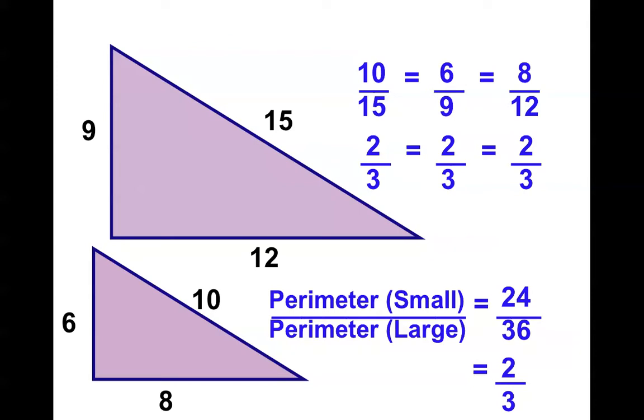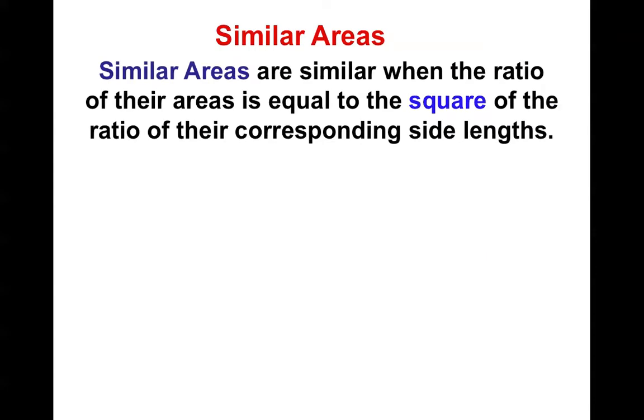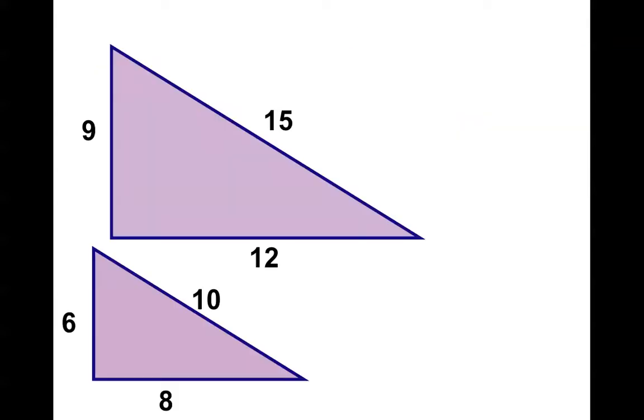Let's check out what the, if area has a relationship. It is said that similar areas are similar when the ratio of their areas is equal to the square of the ratio of the corresponding side lengths. Let's see what that means. Keyword square. Well, once again, I hope everyone realizes that the side lengths became 2-thirds. So let's see what happens with area.